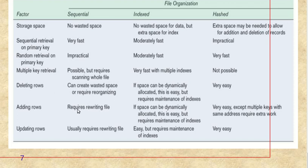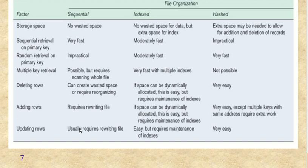For adding rows: in sequential it requires rewriting the file. In index, if space can be dynamically allocated it is easy, but requires maintenance of indexes — you can append data dynamically but must maintain the indexes. In hash it is very easy, except when multiple keys share the same address, which requires extra work. For updating rows, it usually requires rewriting files in sequential, is easy in index but requires index maintenance, and is very easy in hash.